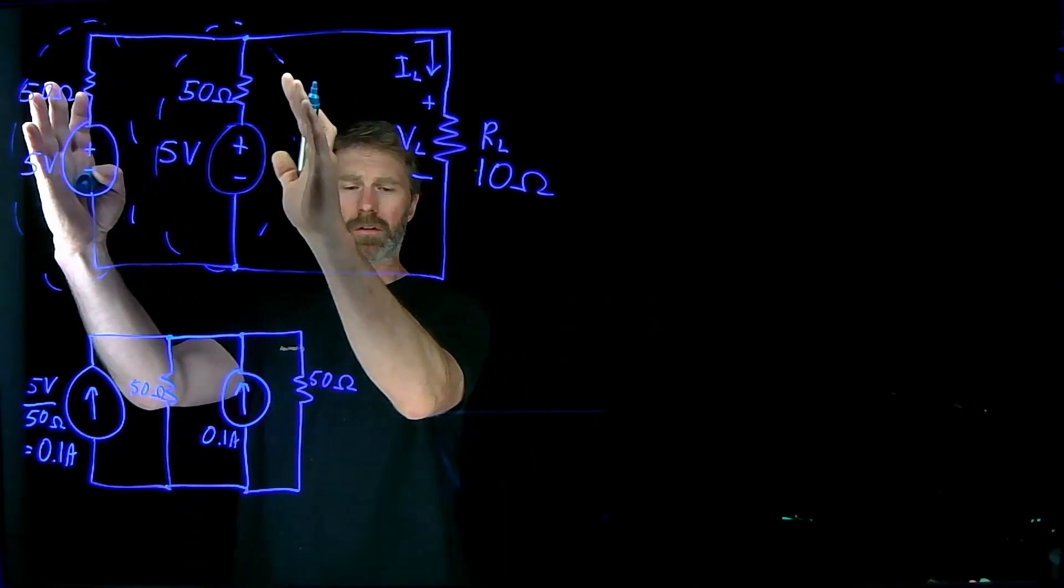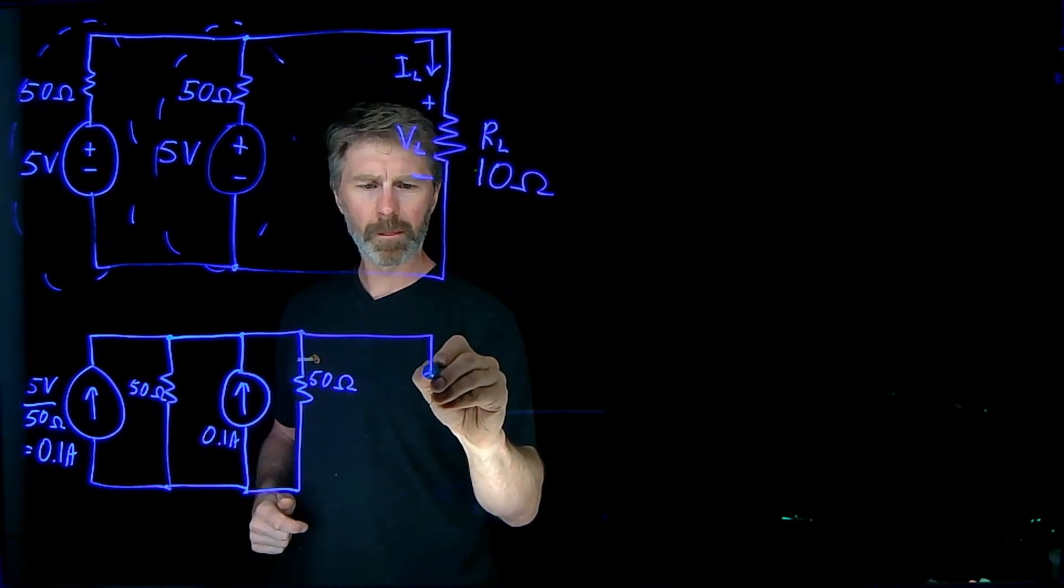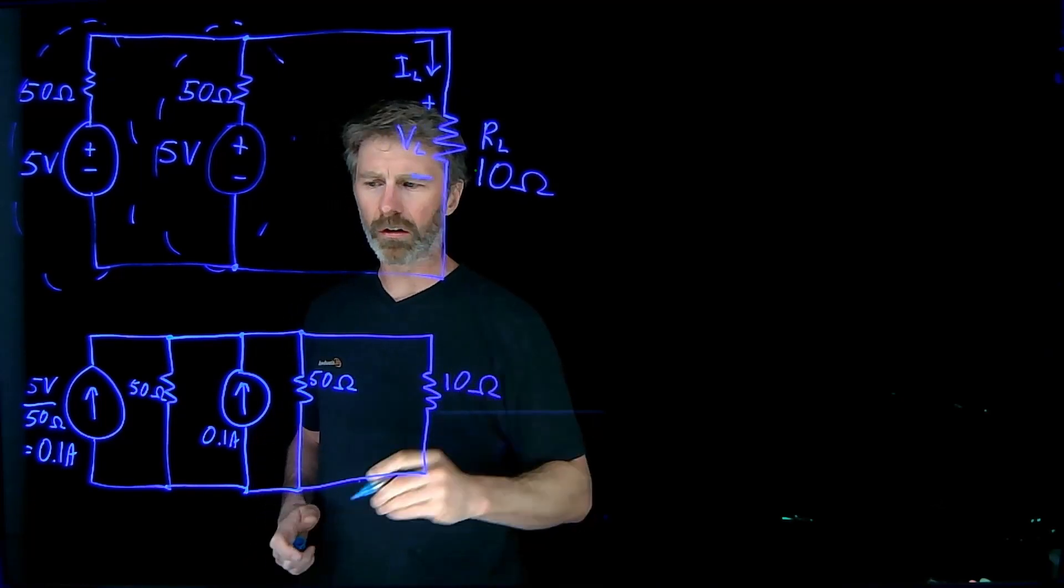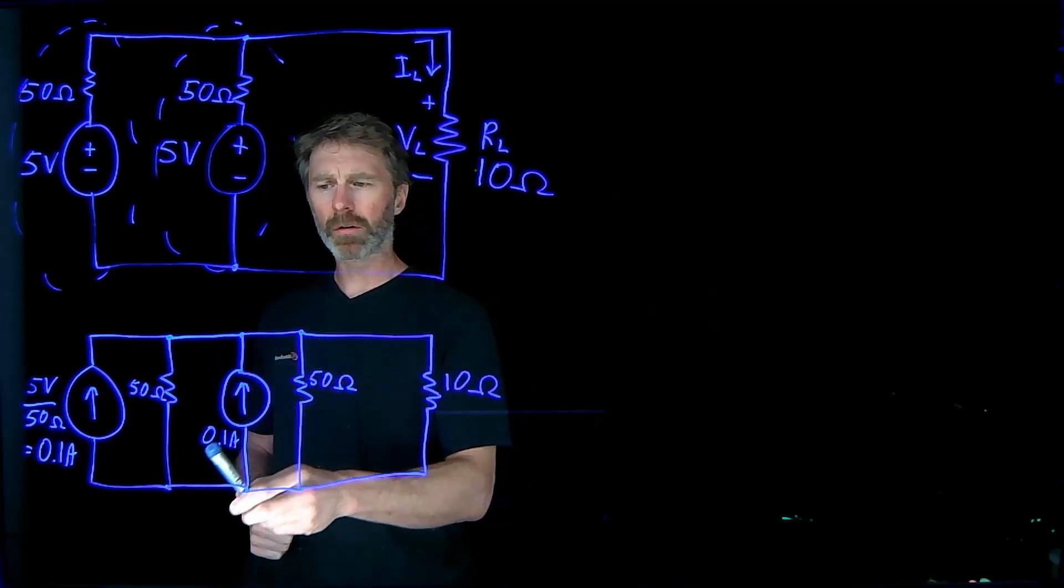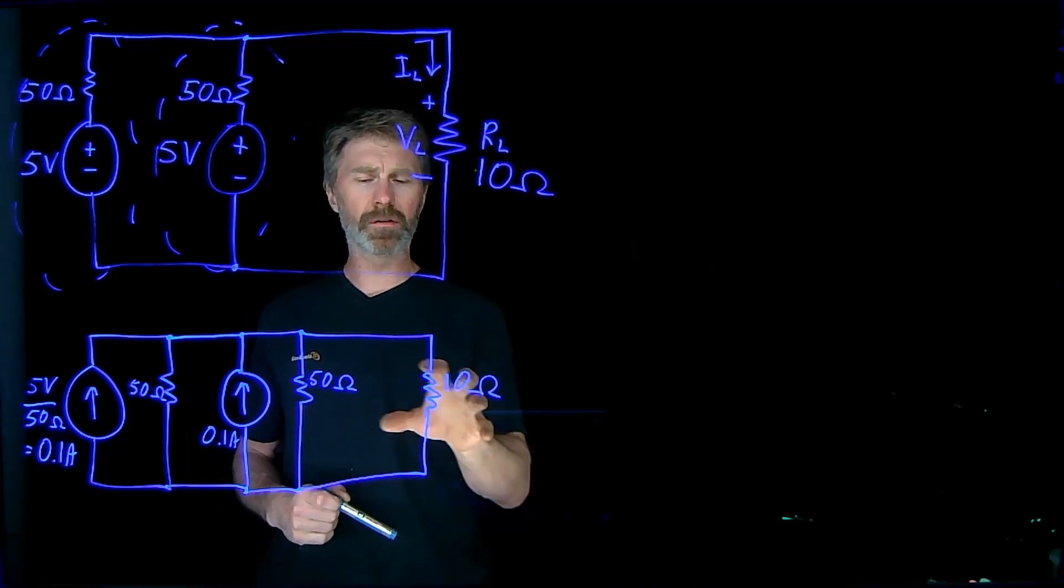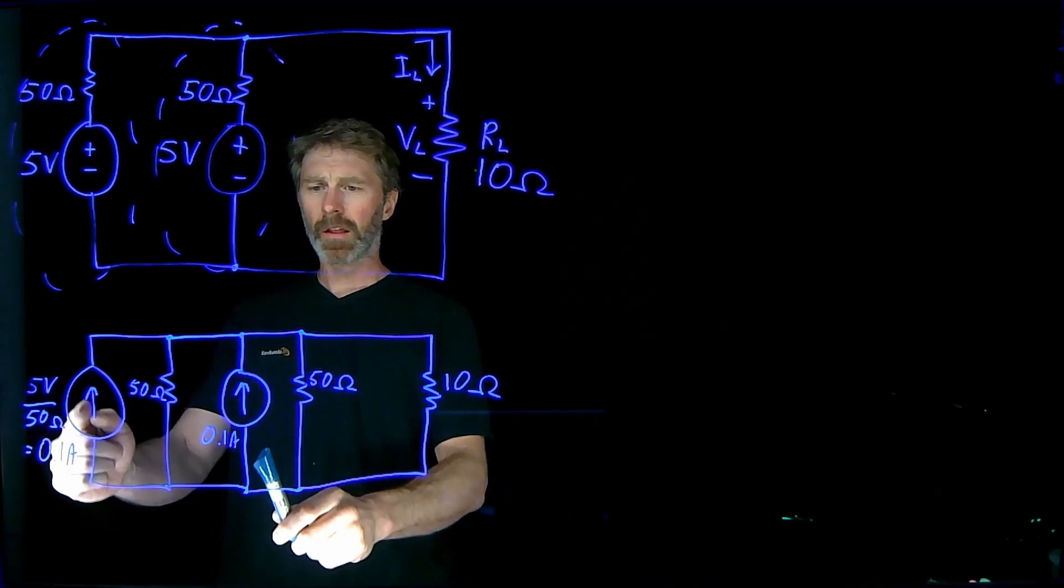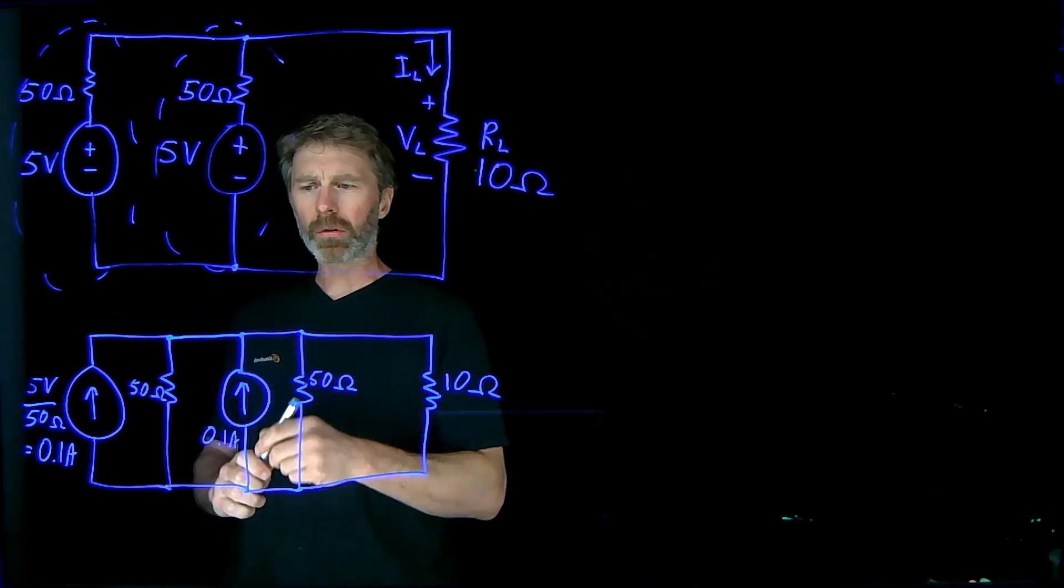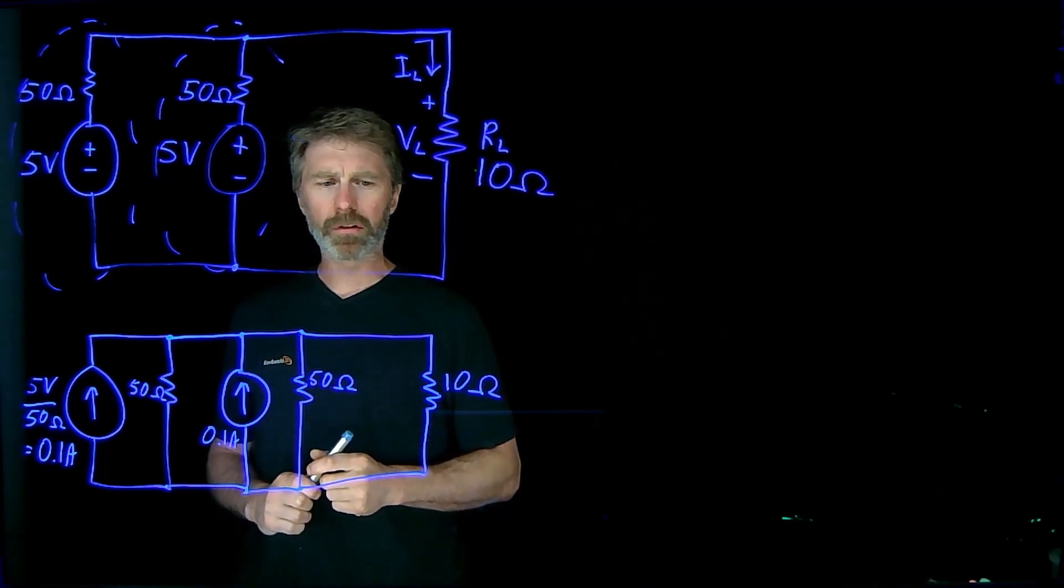And then what we've done, we've converted this part of the circuit to here. All we have left over is the load. So the load resistor, the 10 ohm resistor, is connected over here. And now you can see we have a 10 ohm resistor in parallel with a 50 ohm resistor in parallel with a 50 ohm resistor. So we can use our parallel combination of those resistors to find out what the total resistance is. And we can see that we've got two current sources that are each driving 0.1 amps into the same node here. So the total current that's going to be coming out of that node is going to be 0.2 amps.